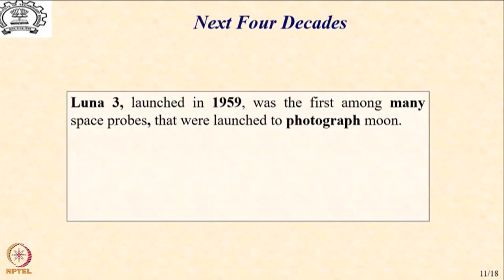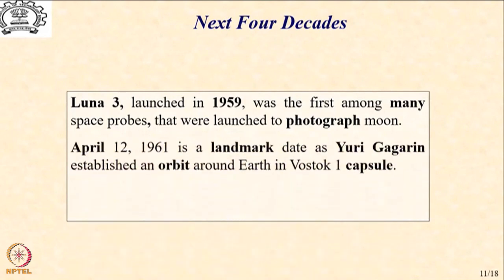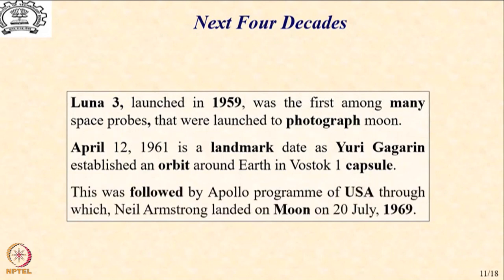The next four decades, 1960 to 2000, were very productive in space technology, starting with Luna 3 which was launched in 1959 — one of the many space probes launched to photograph the Moon. All of us remember April 12, 1961 as a landmark, when Yuri Gagarin established an orbit around Earth in the Vostok 1 capsule, which paved the way for humans in space. This was followed by the Apollo program of USA, through which Neil Armstrong landed on the Moon on 20th July 1969.